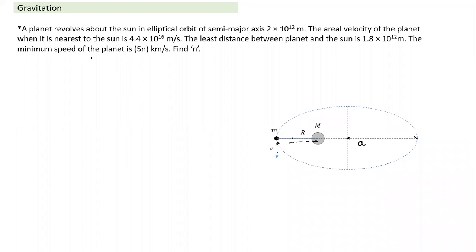What we need to find is the minimum speed of the planet. When it is nearest to the sun, the speed is maximum. When it is farthest, r becomes larger, so speed becomes minimum. What we need to find is the value at the farthest point. We know v_max times r_min equals minimum velocity times r_max — angular momentum being equal.